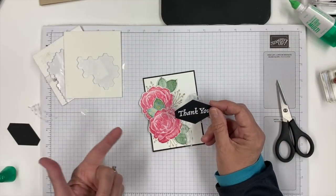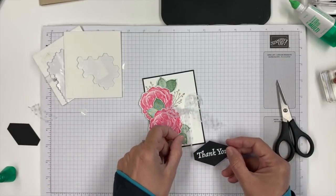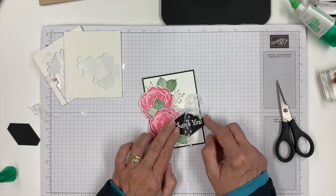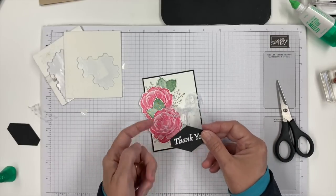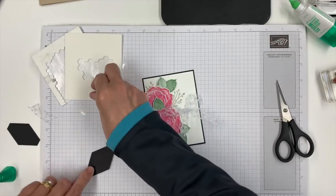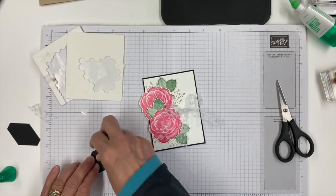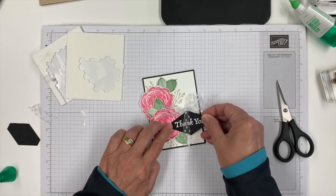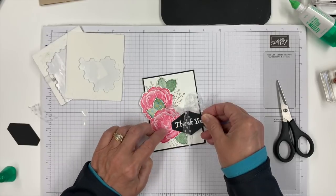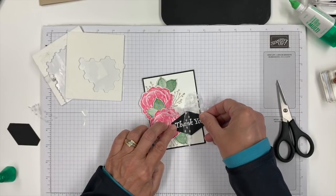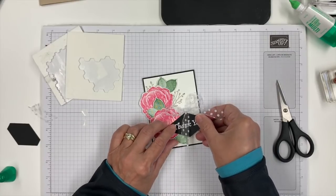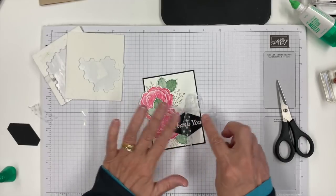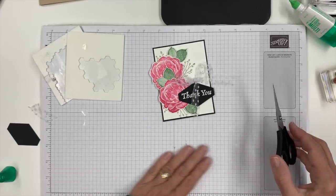Now all we need to do is add our greeting. This could be happy birthday, congratulations, thinking of you. We're going to put it about right there. I don't want dimensionals way over on the right part, so we're putting them on the left, because as we're layering and popping these up, this left side is going to go on top of that flower. So we don't want it kind of crooked.